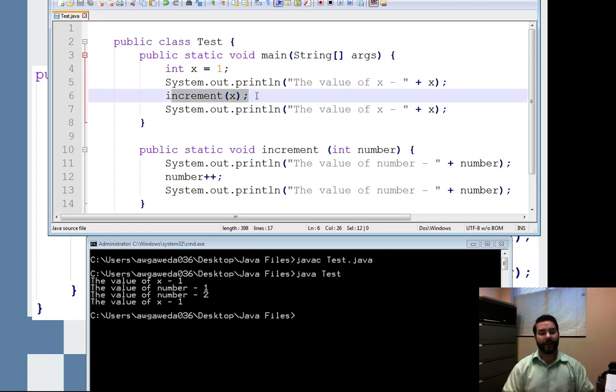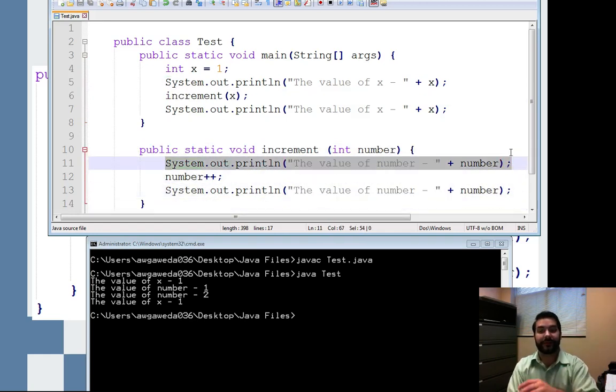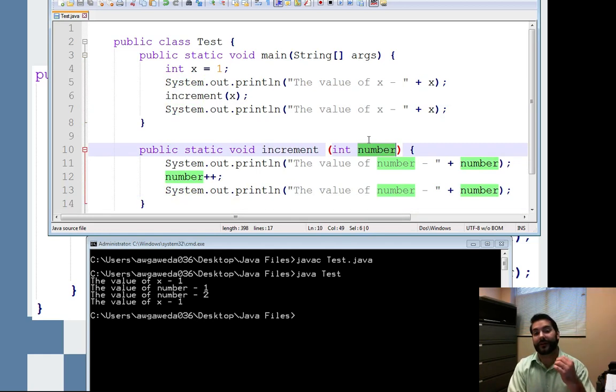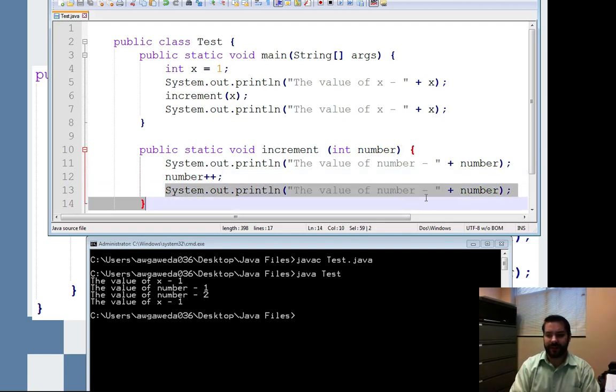Well, again, what happens is when I call a method, it activates. I don't move forward in my main method. I don't go any further in my main method until this is done. So as you can see, there's a lot to do. The first thing I say is to print the value of number. Again, remember I call it number, not x. So then I say, well, number plus plus. Then print it again.